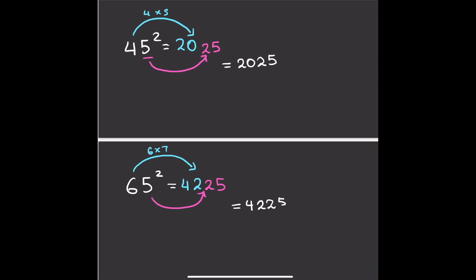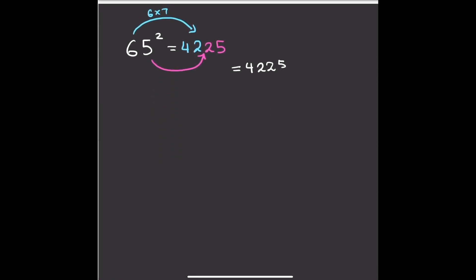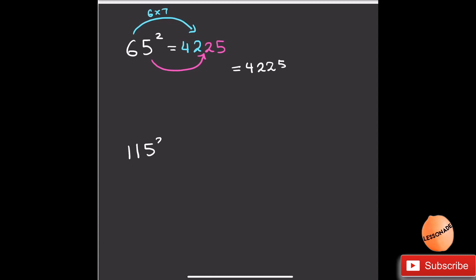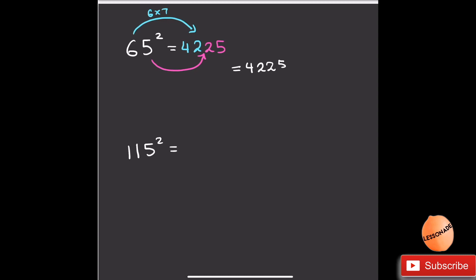I think you guys are now ready to go on to harder questions. Let's go on to three-digit numbers now — let's go to 115. I'll show you guys how to do this one. With 115 squared, we're going to do the same thing again: 5 squared, which is going to be 25. And then 11 — this time we're going to times it by its next highest number, which is obviously going to be 12. So 11 times 12 is 132. We write that 132 down, and the answer is going to be 13,225.